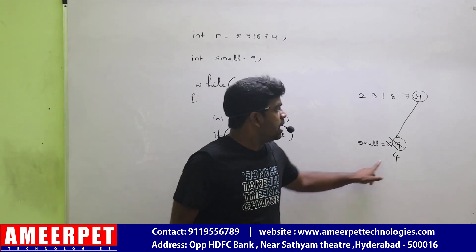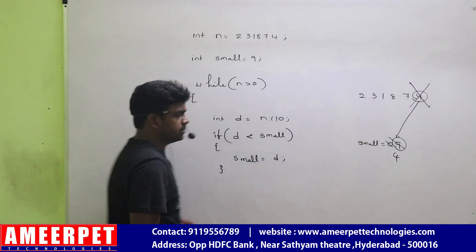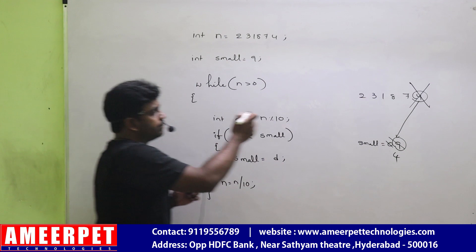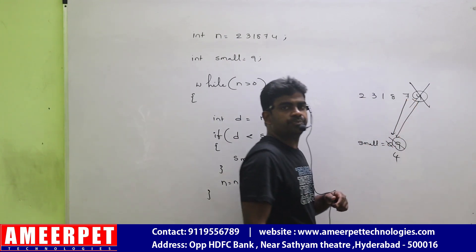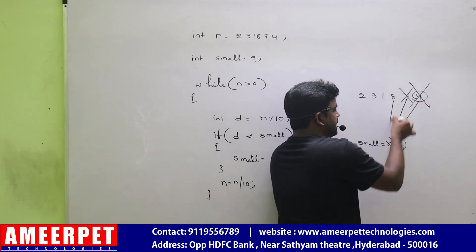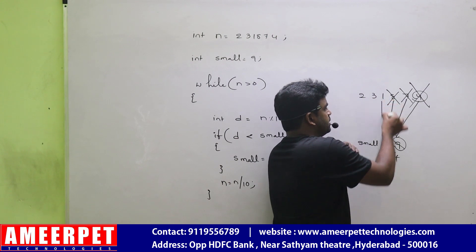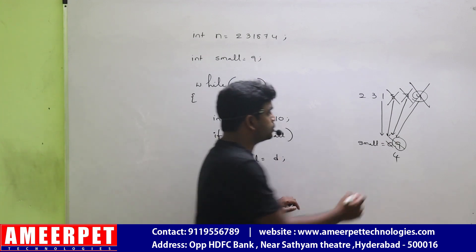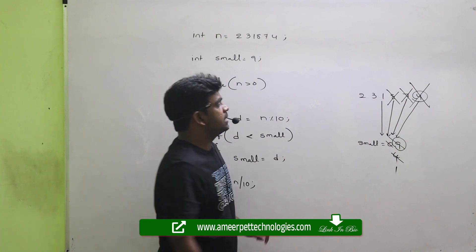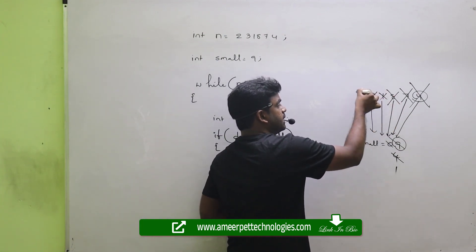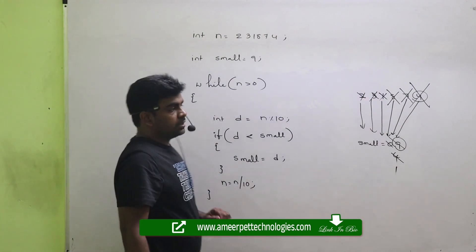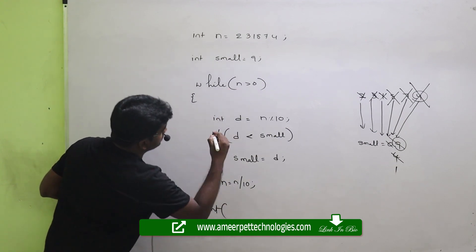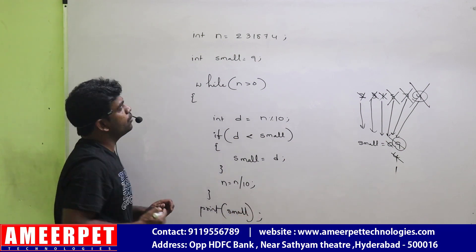That digit is 4. After working with this digit, please remove it using n equals to n divided by 10. Then the loop repeats. Next is 7 — is it the smallest digit? No, remove it. Next is 8 — smallest? No, remove it. Next is 1 — yes, 1 is smaller than 4, so store 1 into small. Next is 3, not smaller. Next is 2, not smaller. Finally the value becomes 0, condition fails, and we print the smallest digit.